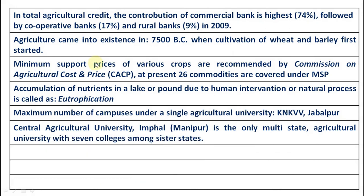Minimum Support Price — MSP — of various crops is recommended by the Commission on Agricultural Costs and Prices, abbreviated CACP. At present, 26 commodities are covered under MSP. This abbreviation CACP and the number 26 commodities are important to remember.